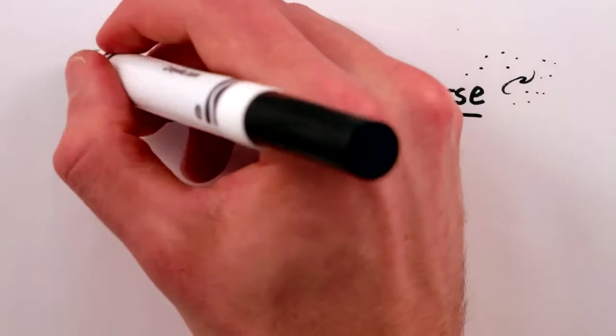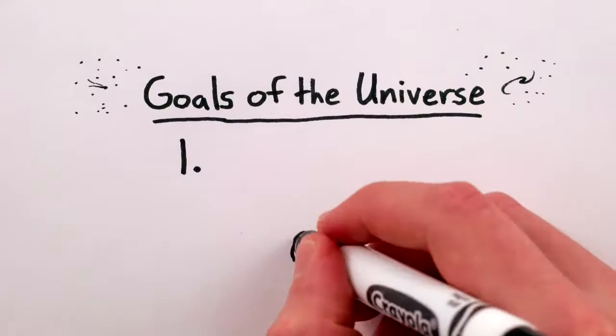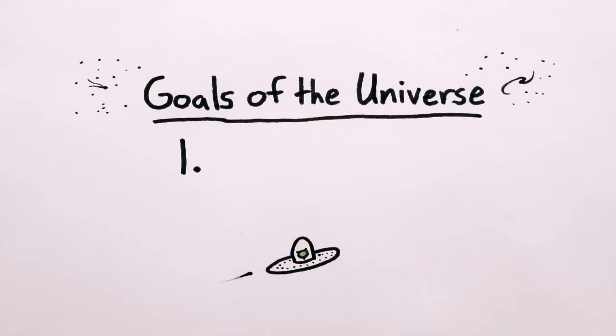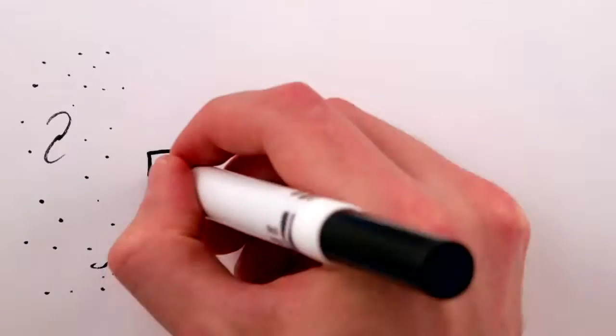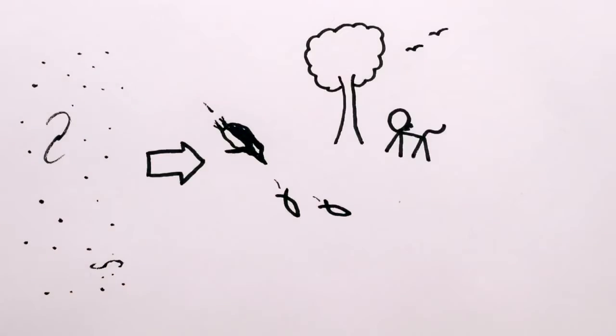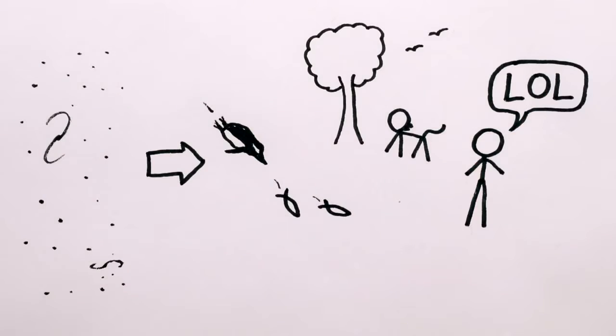To assert that the universe has a purpose implies a desired outcome, but who would do the desiring? And what would a desired outcome be? That carbon-based life is inevitable? Or that sentient primates are life's neurological pinnacle?